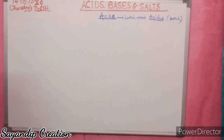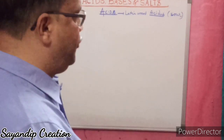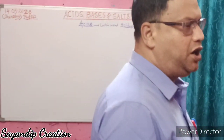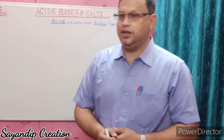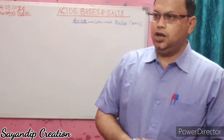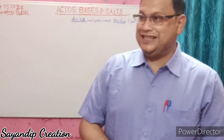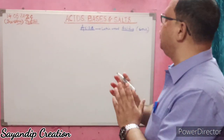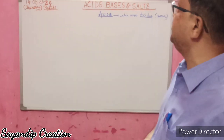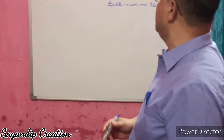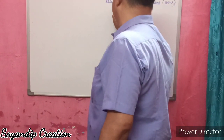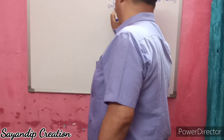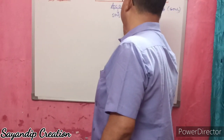You have heard about numerous acids like hydrochloric acid, sulfuric acid, and acetic acid in the form of vinegar. So acids, in a small definition, are substances which are sour in taste.